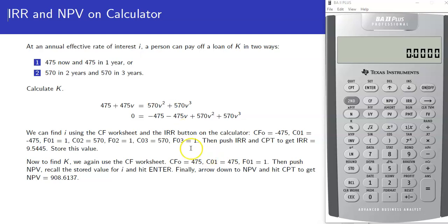Traditionally we would set up an equation. We've got present values of these cash flows: $4.75 now and $4.75 in a year, so we bring it back one year using our V notation. That has to equal $5.70 in two years and $5.70 in three years, brought back two years and three years respectively. Ordinarily you would solve this equation by setting everything equal to zero and trying to figure out what V is.